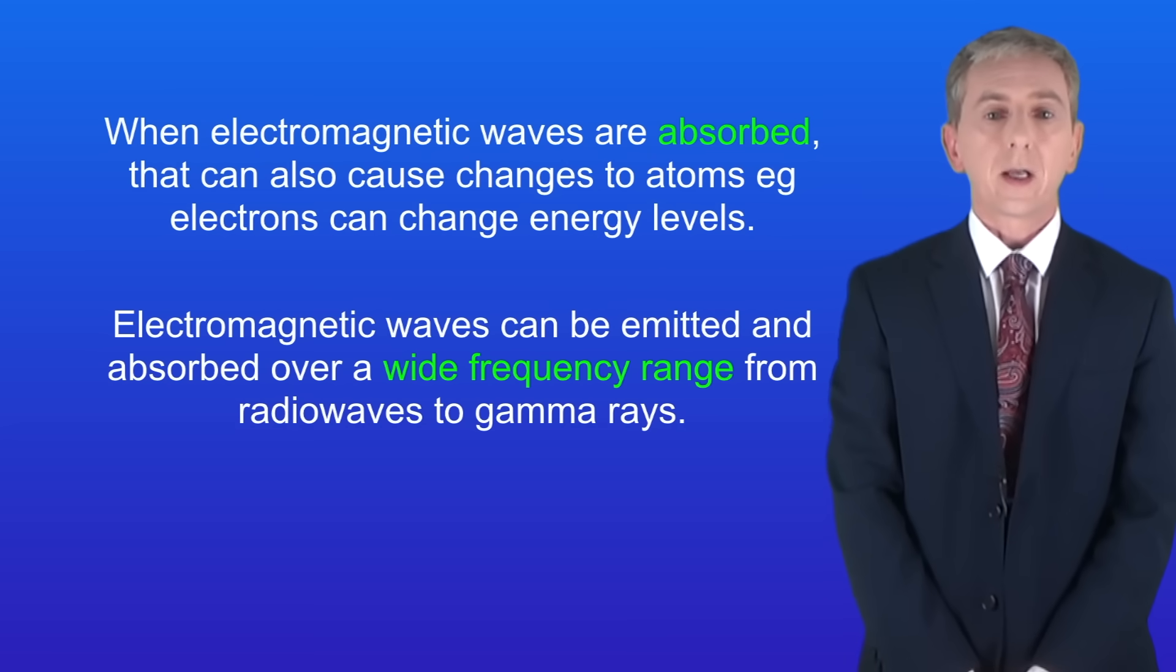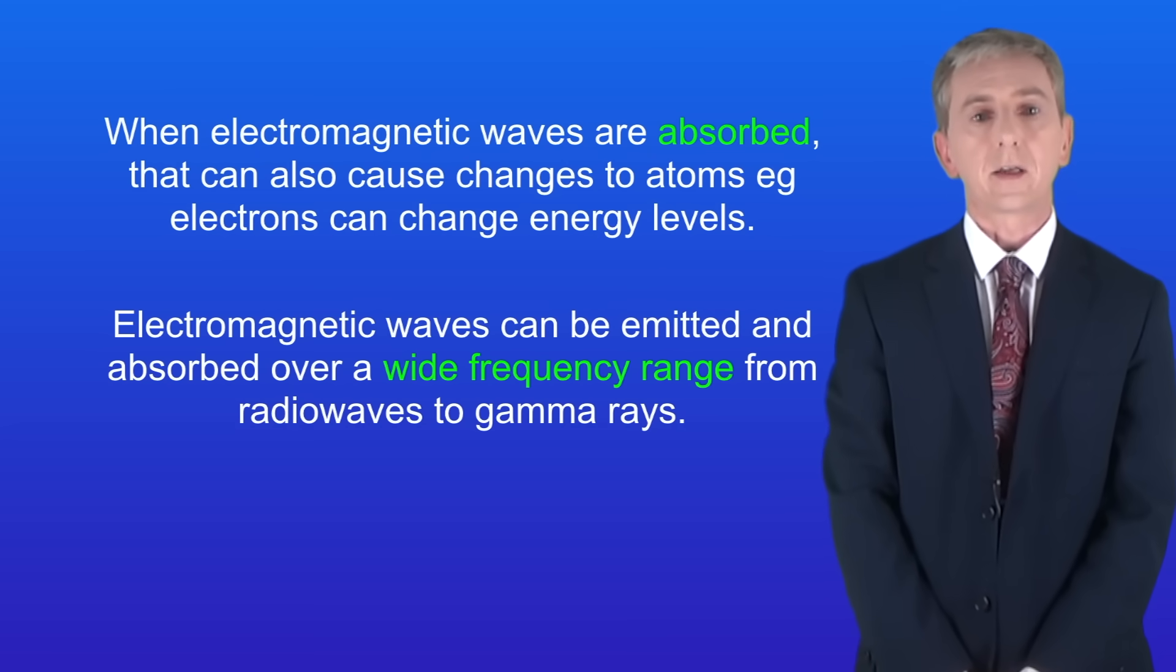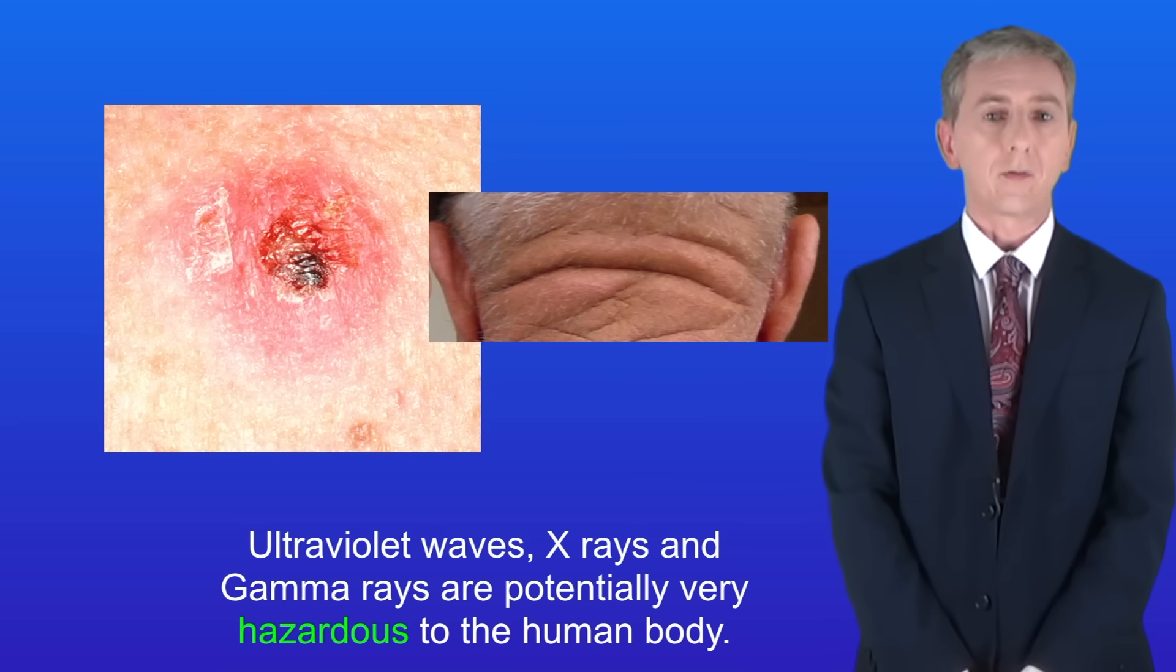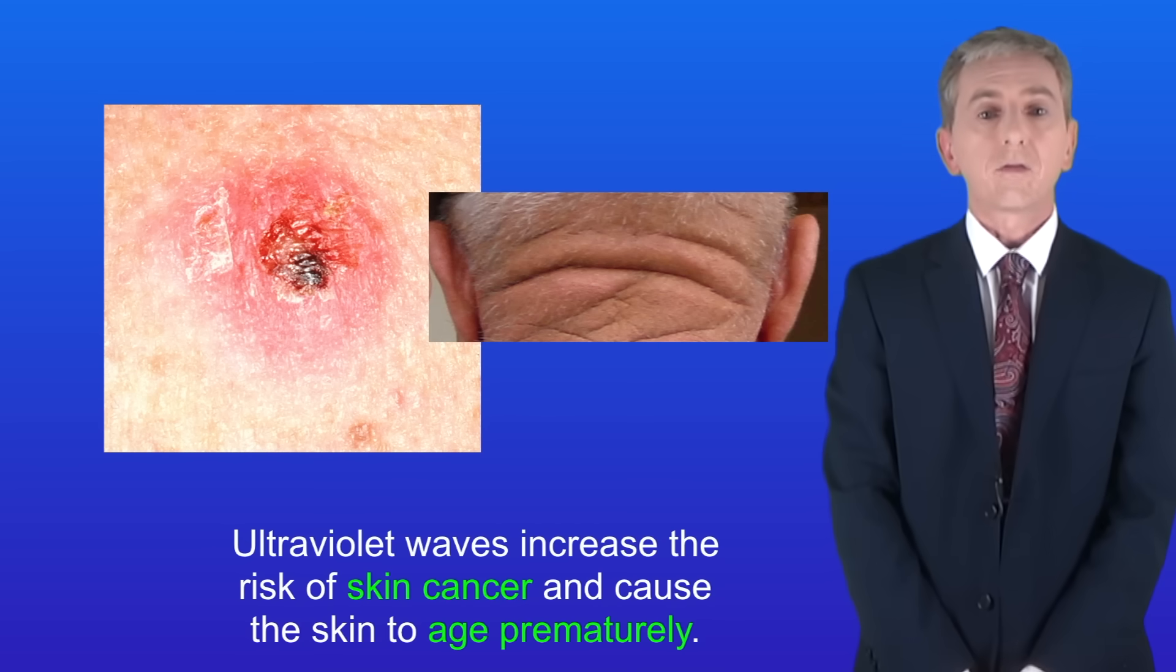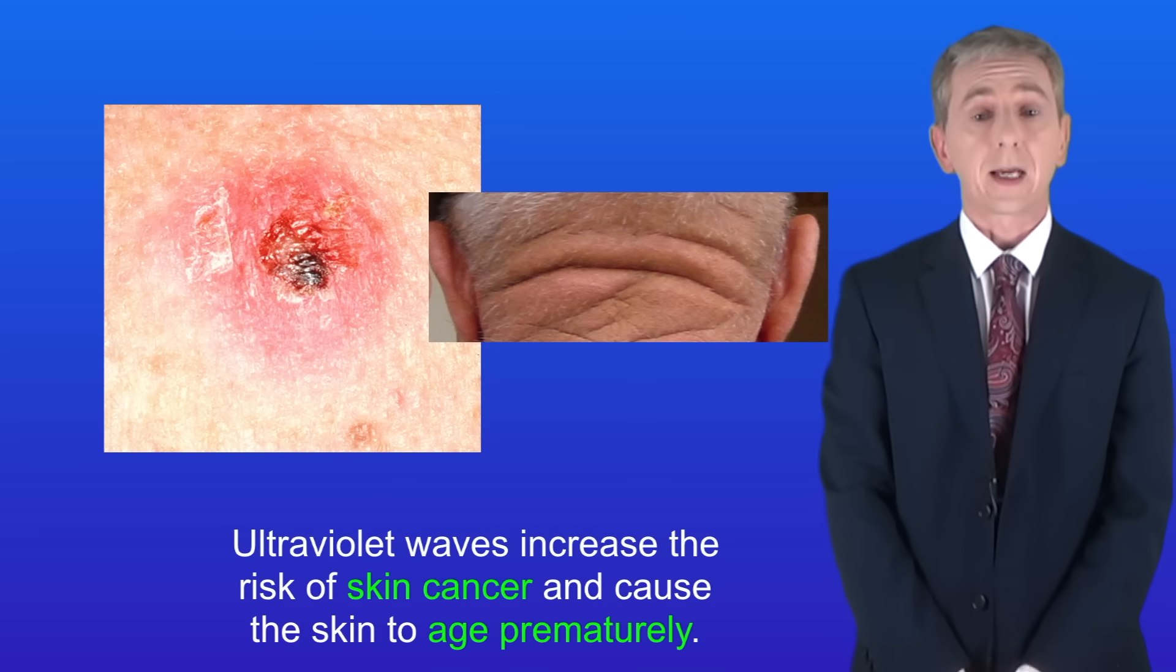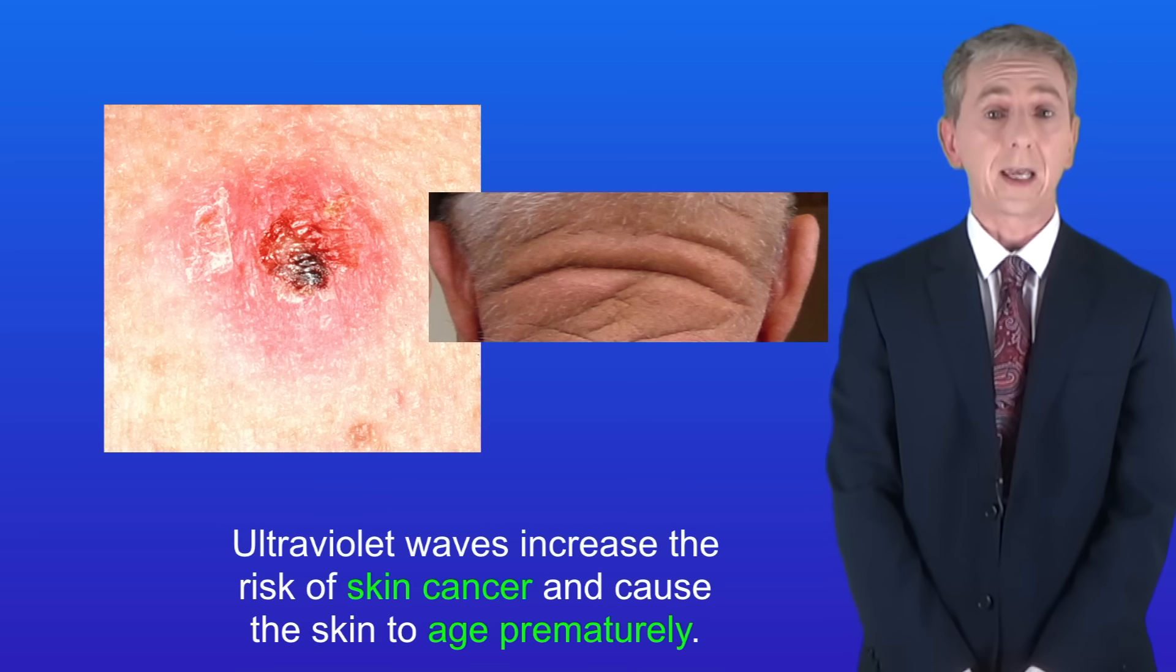Okay we're going to look now at the hazards of electromagnetic radiation. Ultraviolet waves, X-rays and gamma rays are potentially very hazardous to the human body. Ultraviolet waves increase the risk of skin cancer and cause the skin to age prematurely.